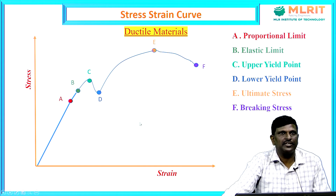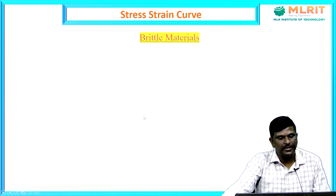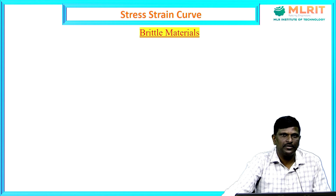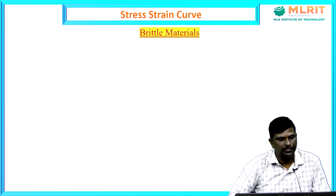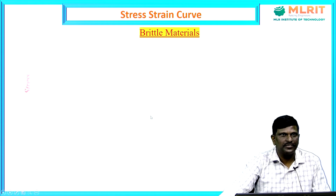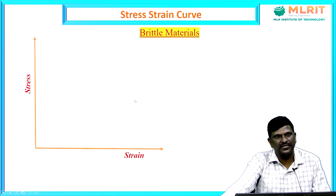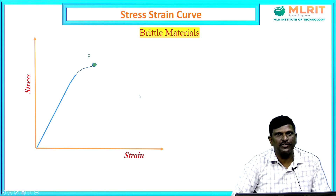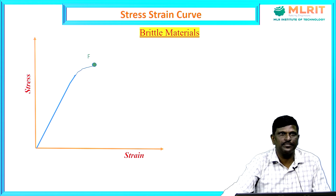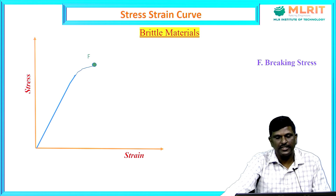This is the stress-strain curve for a ductile material. Now look at the same curve for brittle material. Brittle materials — examples include chalk chips and biscuits — will not elongate on the application of load; they will directly break. For brittle materials, the stress-strain curve shows directly a failure point. The body on the application of load directly fails. It has only one point, that is the breaking point.